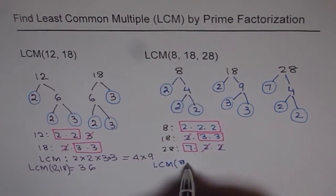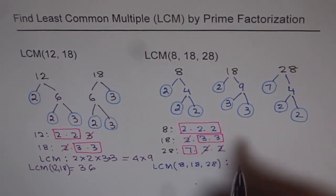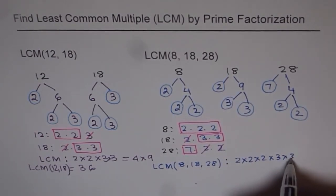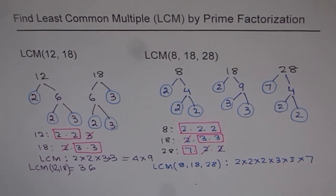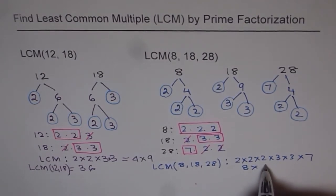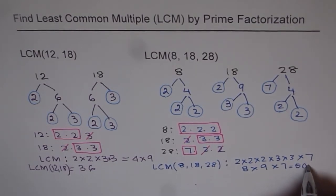So, the LCM for us is, LCM for these 3 numbers, 8, 18, and 28 is equal to 2 times 2 times 2, 3 times 3, times 7. That is the LCM for these numbers. We can multiply all these. 2 times 2 times 2 is 8, 3 times 3 is 9, times 7. At times, you can use calculator to find your answer. So, we get 8 times 9 times 7. That is 504. So, we get our answer as 504.